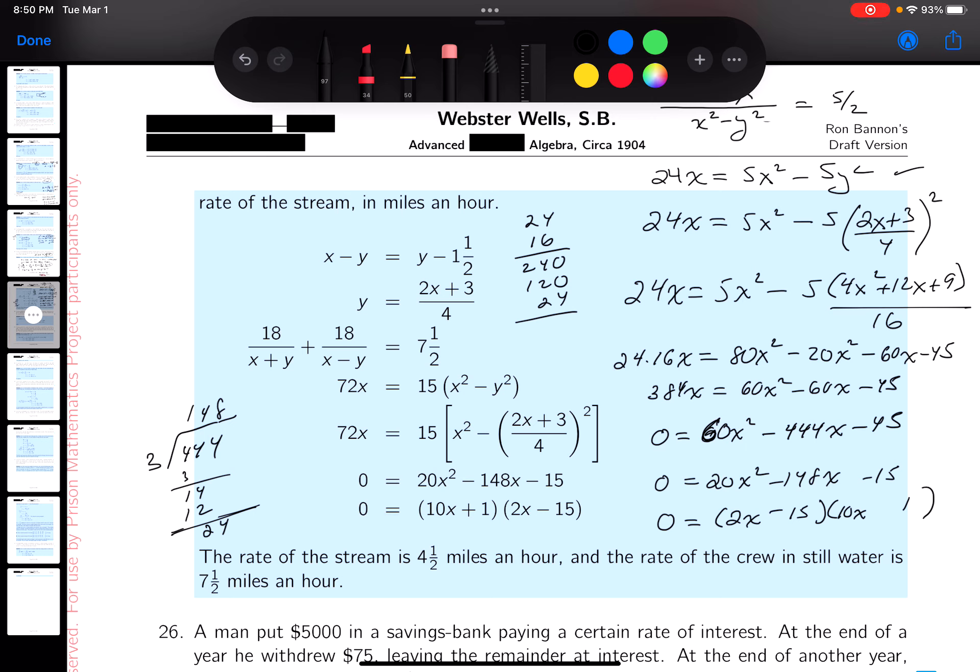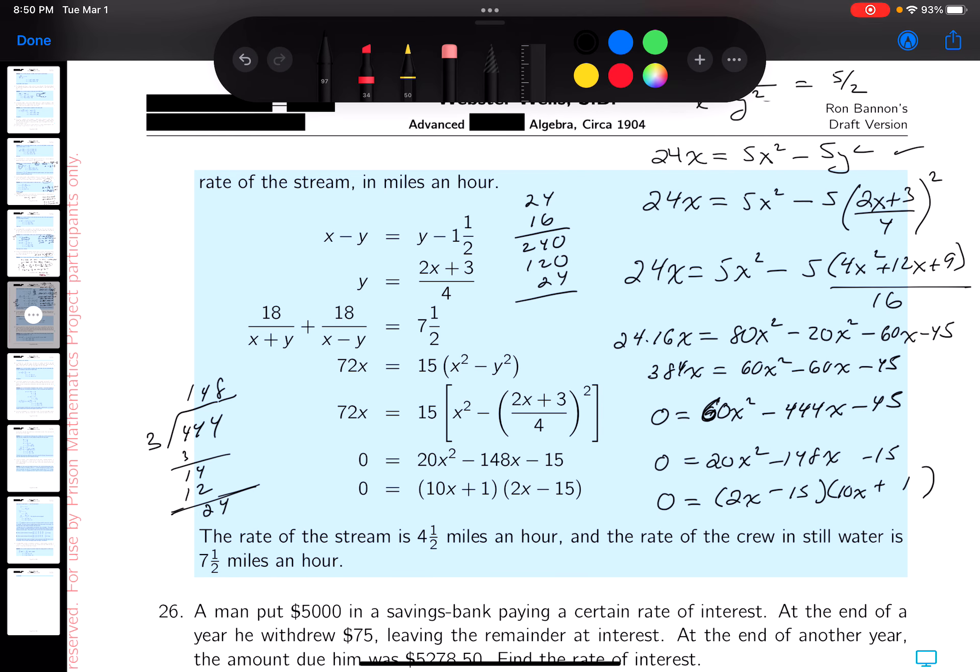I'm gonna say minus 15 plus 1, and I think that's gonna work. It's gonna be 20X squared, then minus 150 plus 2 is minus 148. It works like a charm.